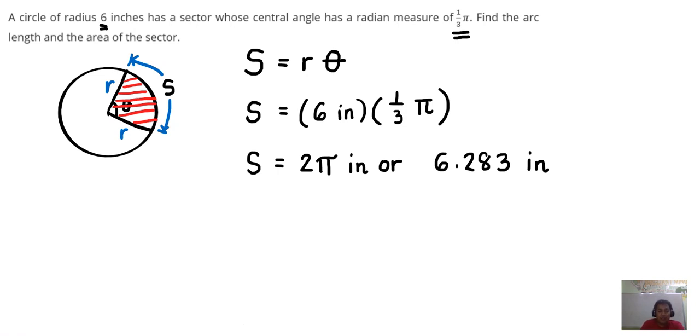So the area, this is our answer for this one. The area is equal to one-half r squared theta. So the area is one-half r squared theta. So basically, this is also a simple substitution.